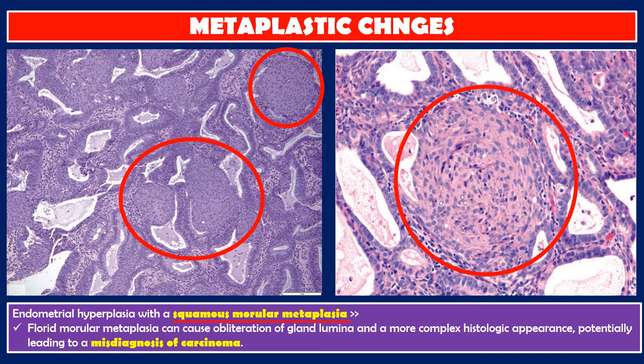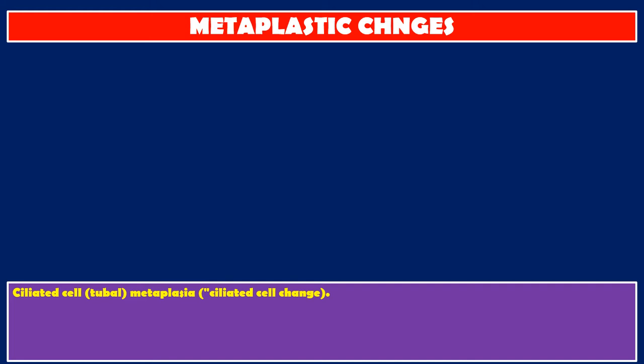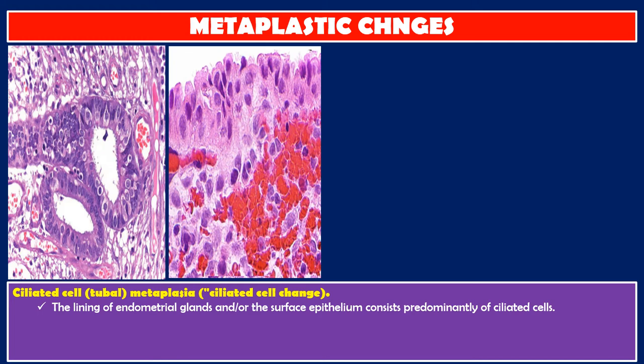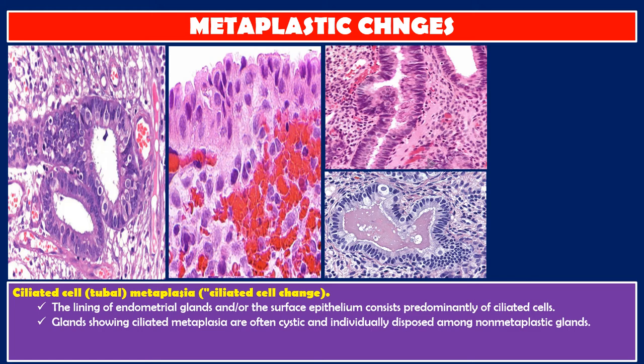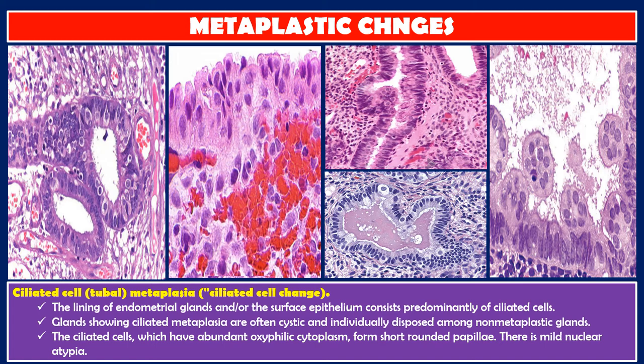Ciliated cell metaplasia — ciliated cell change: the lining of endometrial glands and/or the surface epithelium consists predominantly of ciliated cells. The glands showing ciliated metaplasia are often cystic and individually disposed among non-metaplastic glands. The ciliated cells, which have abundant oxyphilic cytoplasm, form short rounded papillae.